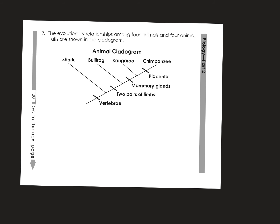Here's the cladogram showing evolutionary relations among four animals. We have vertebrate as a trait, and an out-group — perhaps a snail, which is an invertebrate with no backbone. Somewhere along the line, a common ancestor developed a vertebrate. Sharks were among them, but some individuals developed two pairs of limbs — not sharks. Sharks developed in a different direction, while a common ancestor between bullfrogs, kangaroos, and chimpanzees had two pairs of limbs.